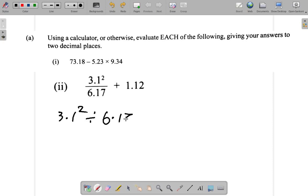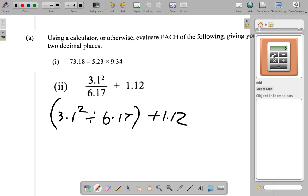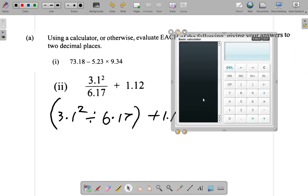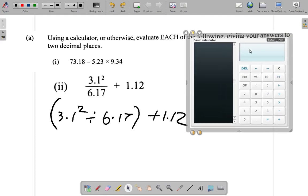That's the meaning of the divided line here. So let's get our calculator and work it out. This becomes 3.1 squared.